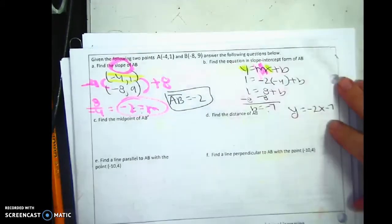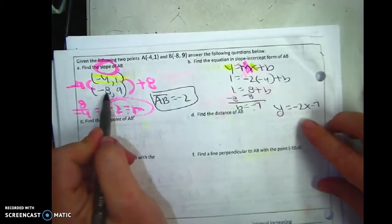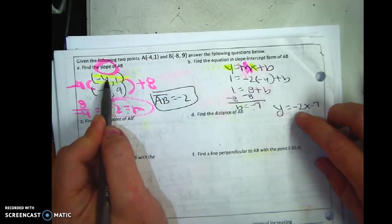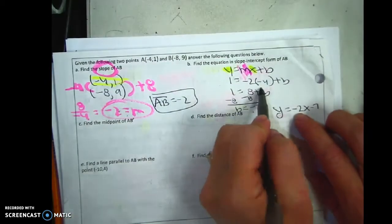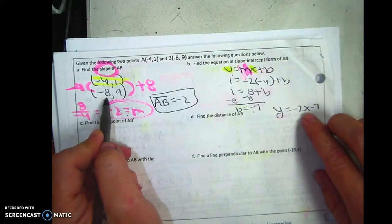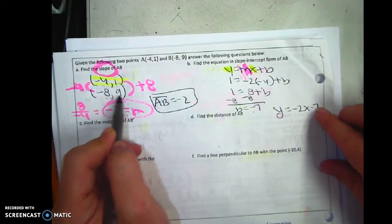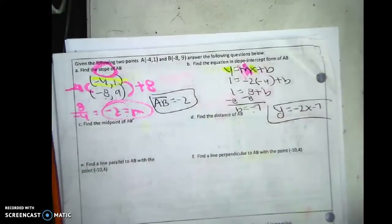Now if I were you I would check your answer. I would go negative 2 times negative 8. Don't check the same point because if you use the same point and you made a mistake you won't find it. So negative 2 times negative 8 is 16, 16 minus 7 is 9. So I know I'm good.